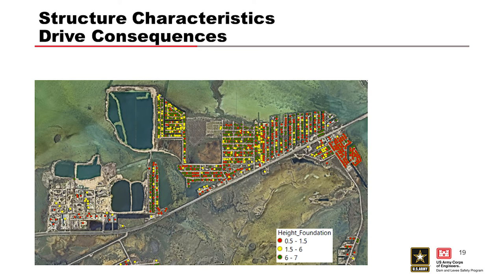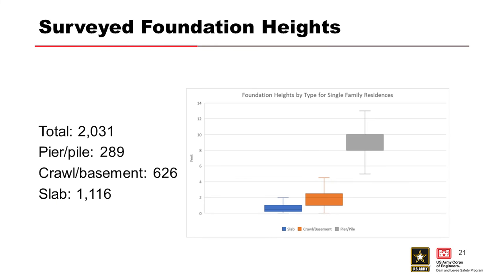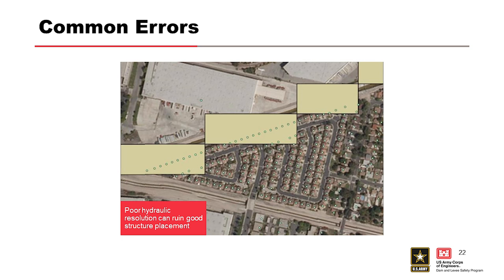This is an example of structure and drive characteristics. Surveyed foundation heights total 2,031, with pier and pile at 289, crawl/basement at 626, and slab at 1,116. Running a consequence calculation will then overestimate the life loss and structural damages, because structures that wouldn't normally get wet are getting very large depths on them much sooner in the simulation.